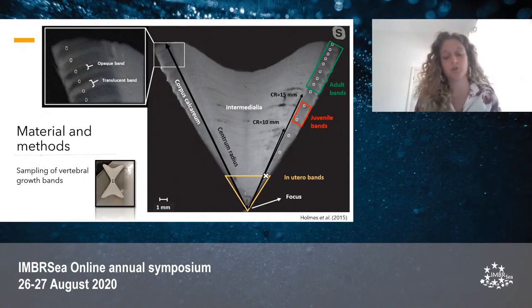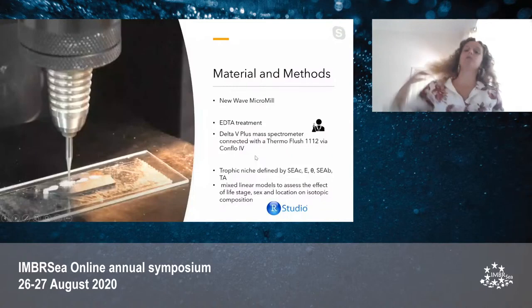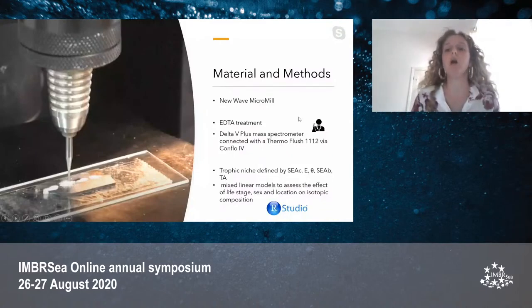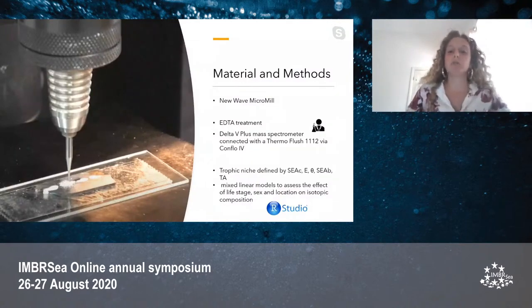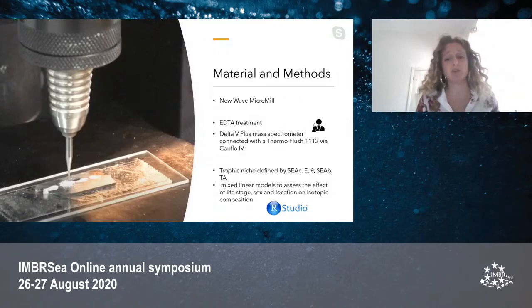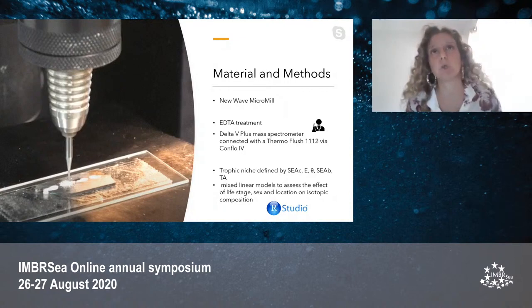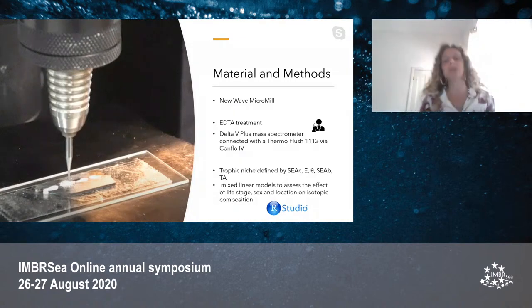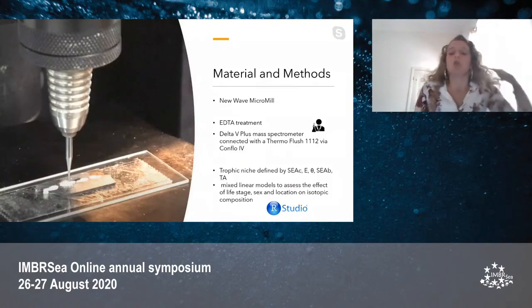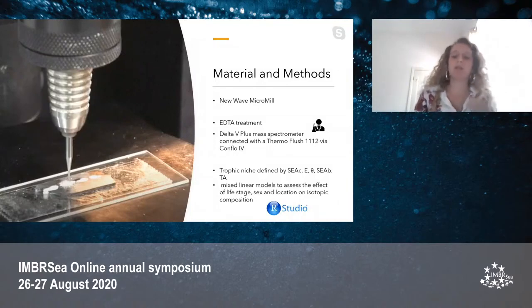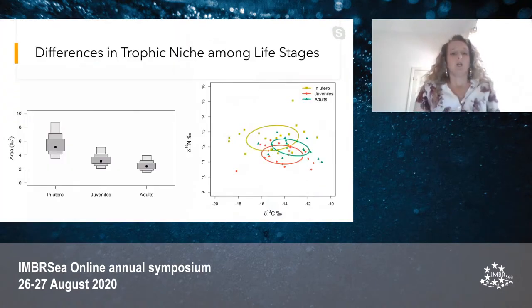We also sampled the region between the focus and the birth band as representative of the in utero stage. The isotopic composition of the in utero stage will be used as a proxy of the mother's isotopic composition, since embryos have high dependence on the yolk for nutrition. These bands were sampled using a micro drill and scalpel, then pulverized to a fine powder. We applied a chemical treatment with EDTA to remove the mineralized part, which does not contain nitrogen and carbon stable isotopes. Isotopic values were obtained from mass spectrometer analysis, and we used R Studio to calculate trophic niche metrics and mixed linear models.